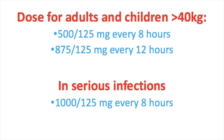Always use the prescribed amount and frequency. For oral use — tablets or suspensions — the usual dose for adults and children weighing more than 40 kilograms is one tablet of 500mg/125mg every 8 hours, or one tablet of 875mg/125mg every 12 hours. In serious infections, the dose can be increased up to 1000mg/125mg every 8 hours. If you've forgotten a dose and it's less than 4 hours until your next dose, just skip it and take the dose at the end of your treatment.